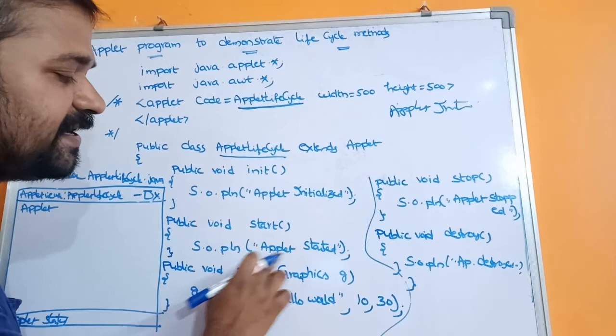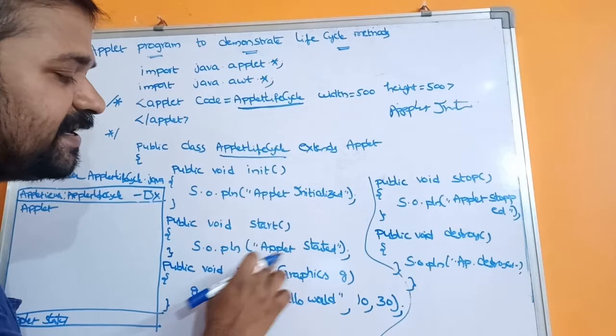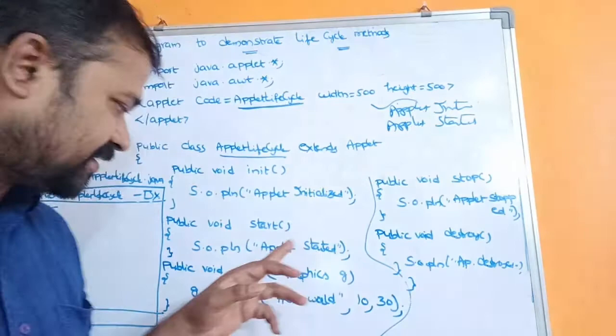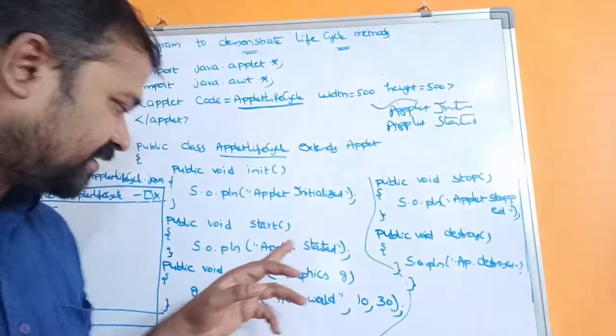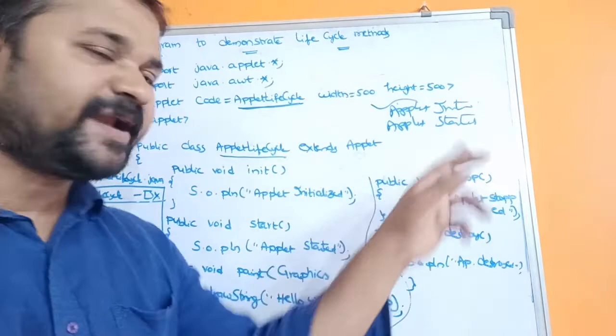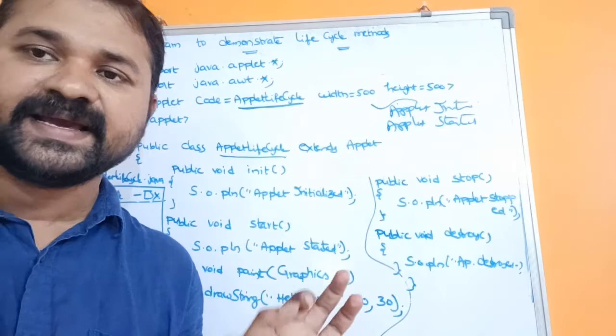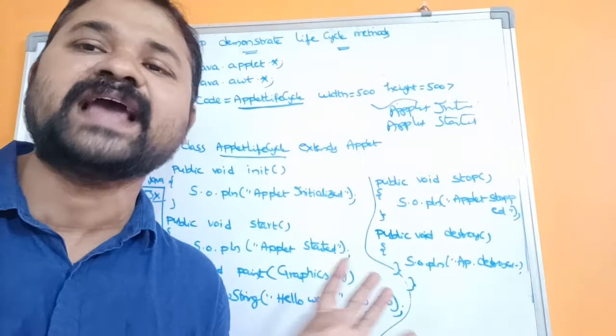After the init method, the start method will get executed. System.out.println('Applet started') will be printed in the command prompt. So, first init method is executed and 'Applet initialized' is printed, then start method is executed and 'Applet started' is printed.